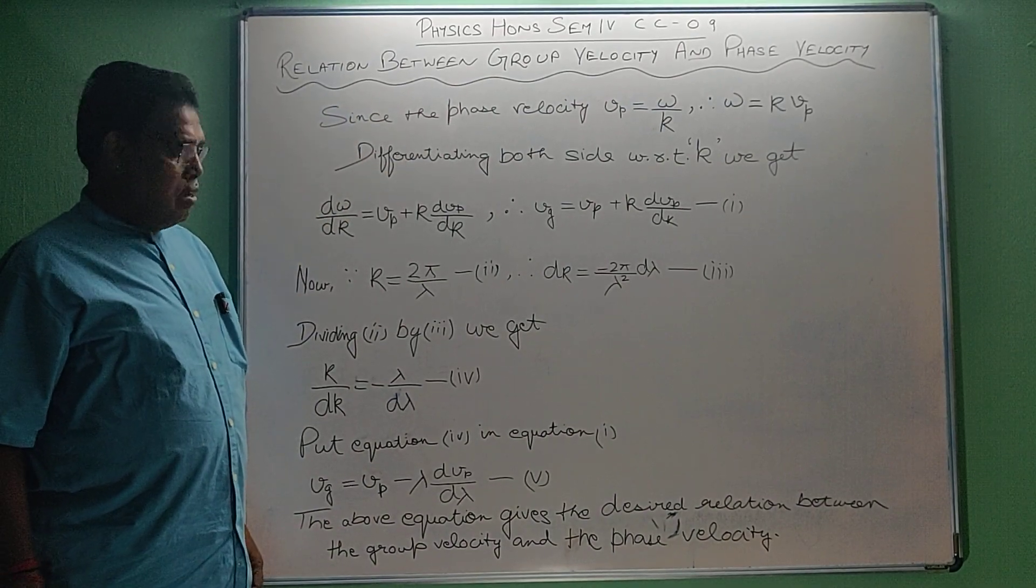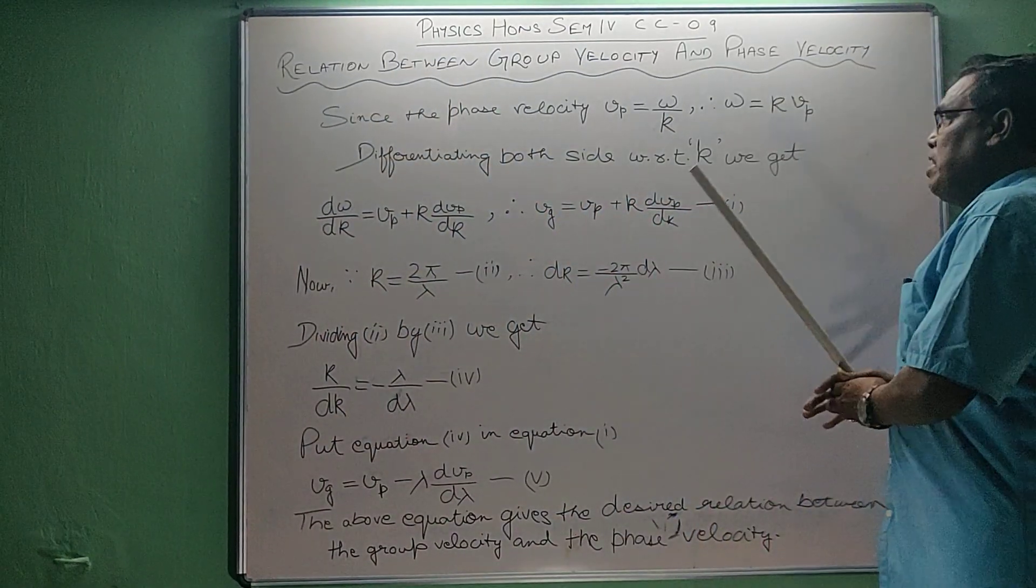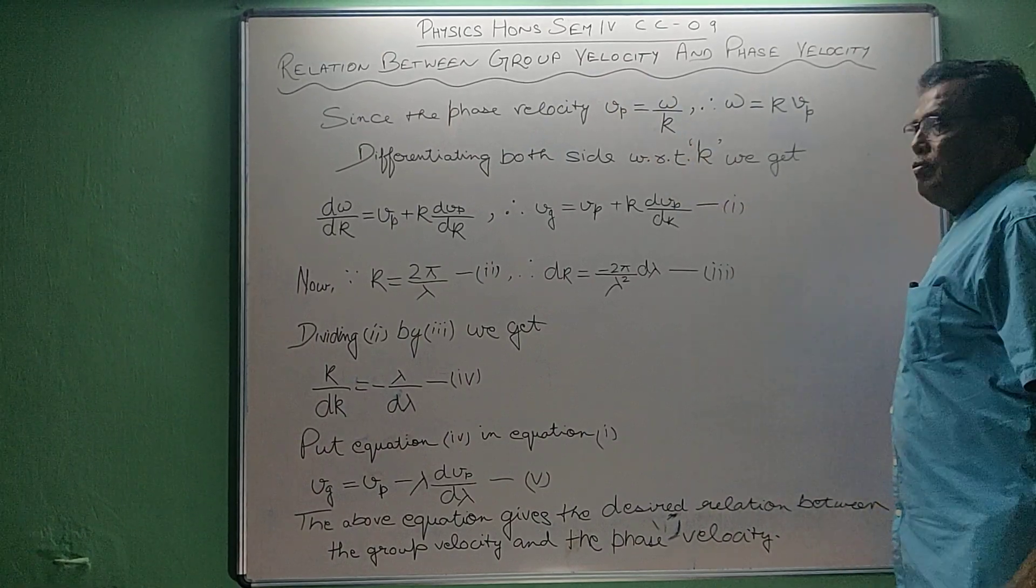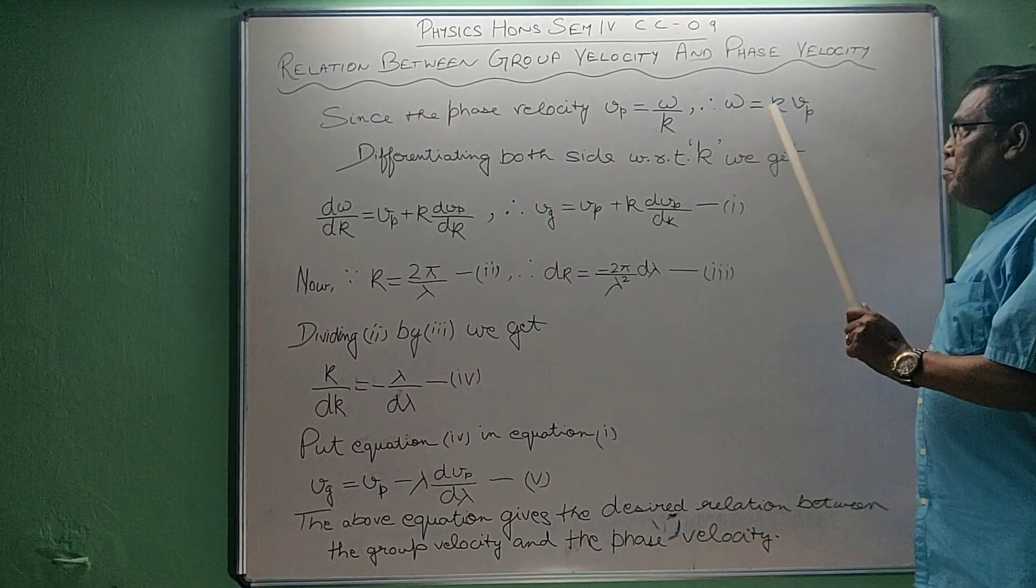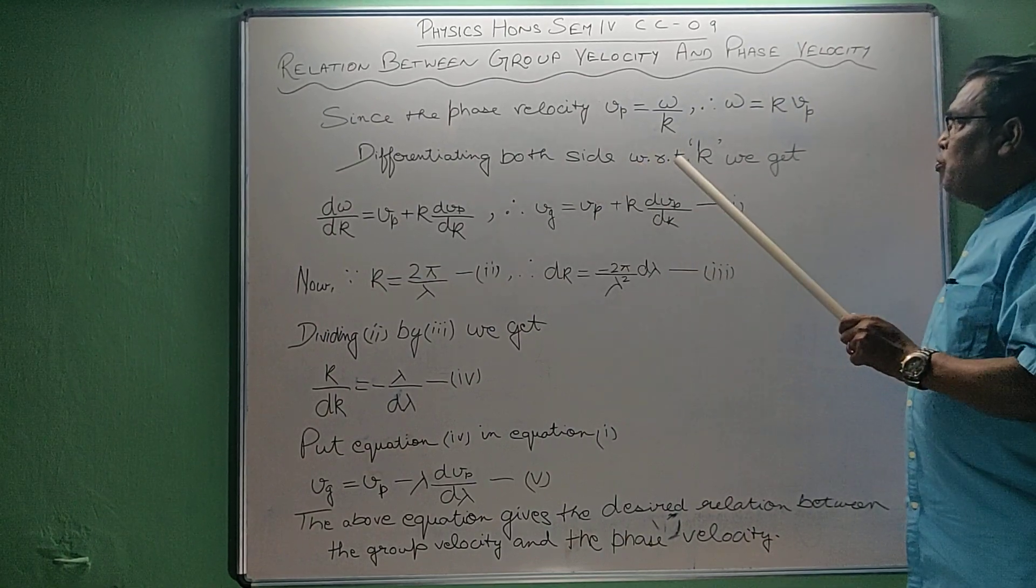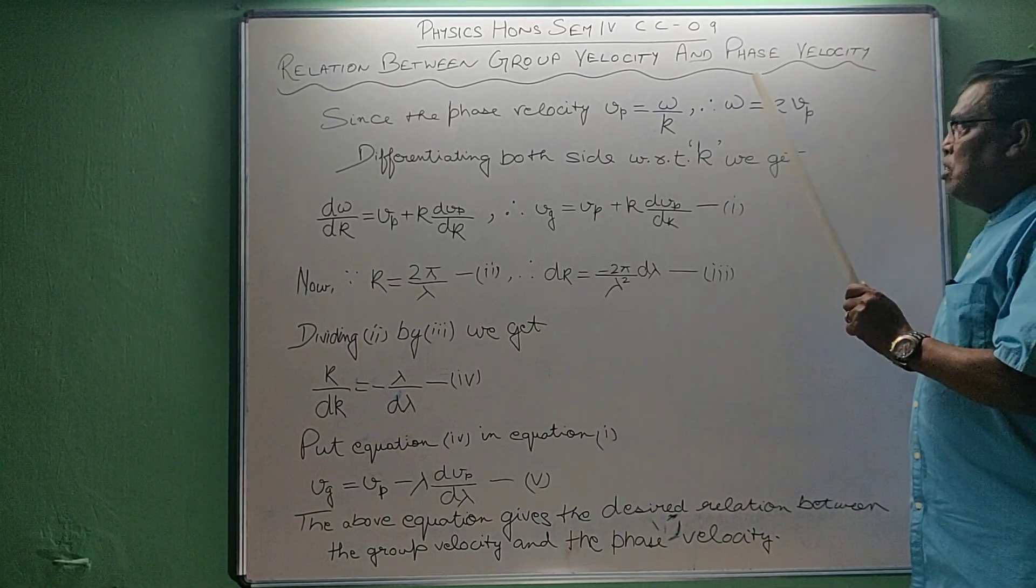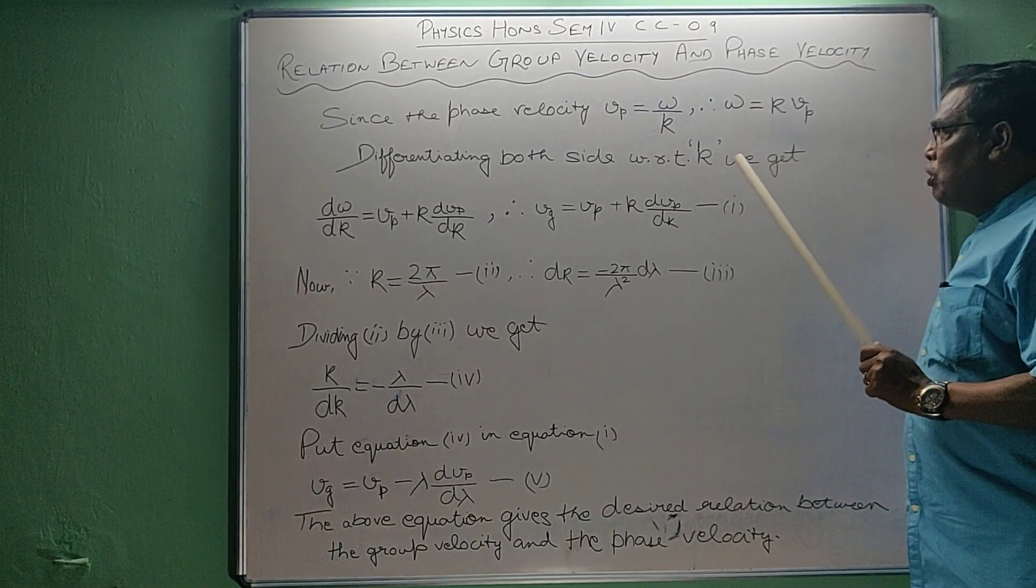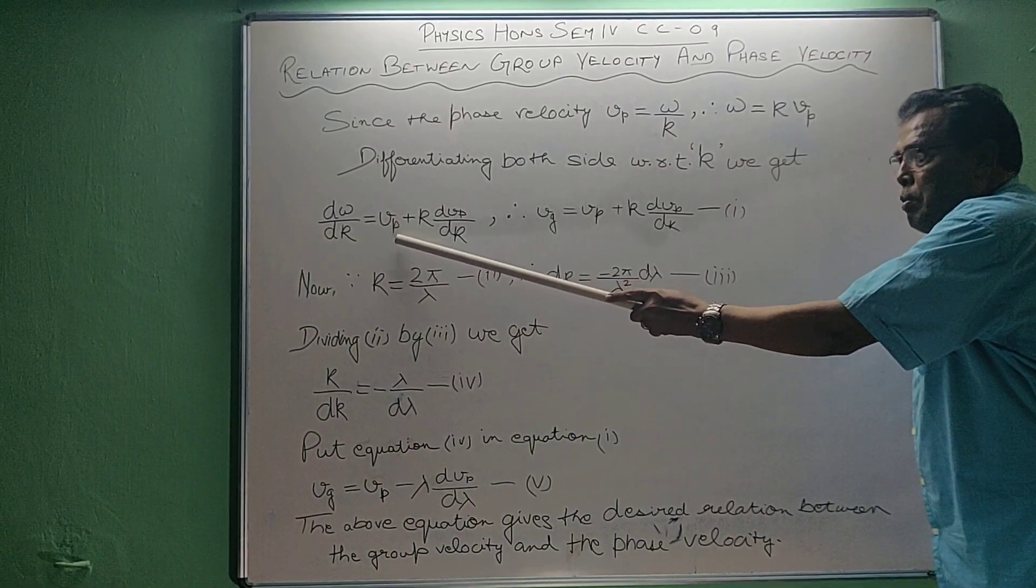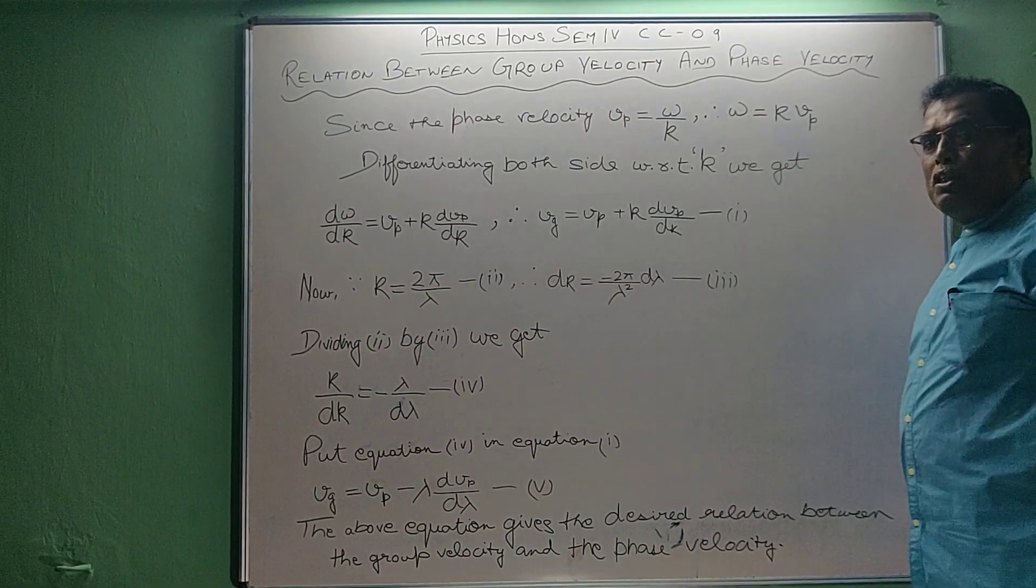Now I have already discussed that the phase velocity vp is equal to omega upon k. Therefore omega becomes k vp. Now differentiating both sides with respect to k, we get d omega by dk equal to vp plus k dvp by dk.